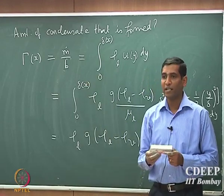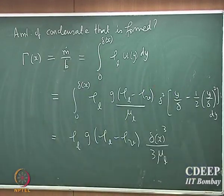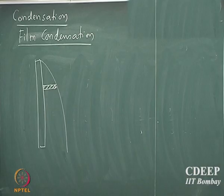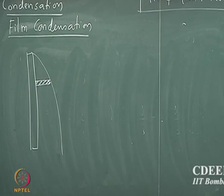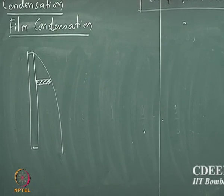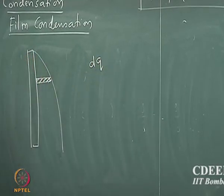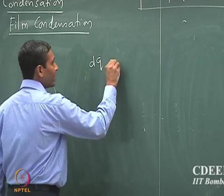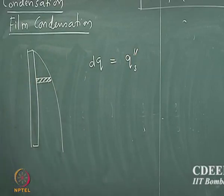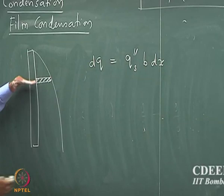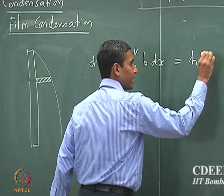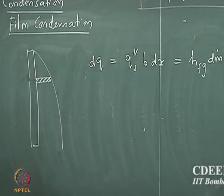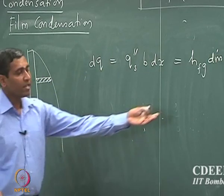How do we relate the amount of condensate to latent heat? We are going to write a simple heat balance. If this is my wall, that is the film. The amount of fluid present here depends upon the amount of heat actually transported from the vapor to the wall. So dq — the rate at which heat is transported from vapor to wall — should equal some flux of heat transport multiplied by b times dx, where b is the length of the plate. That should equal the latent heat multiplied by the differential rate of condensation.